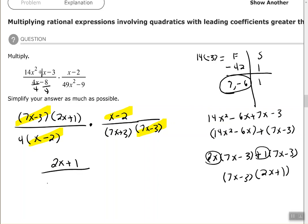In my denominator, I have four times 7x plus three. So four times 7x plus three.